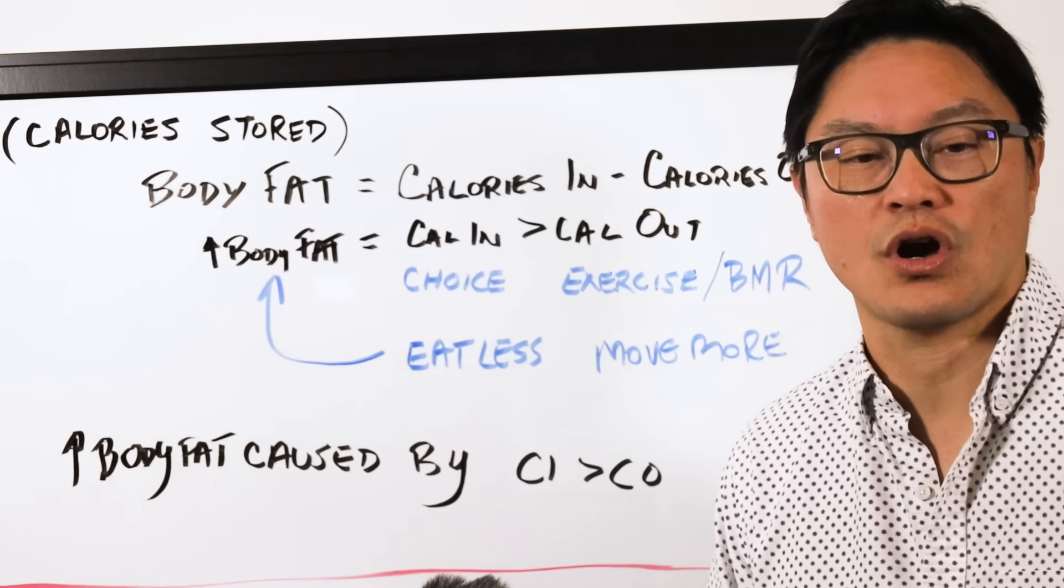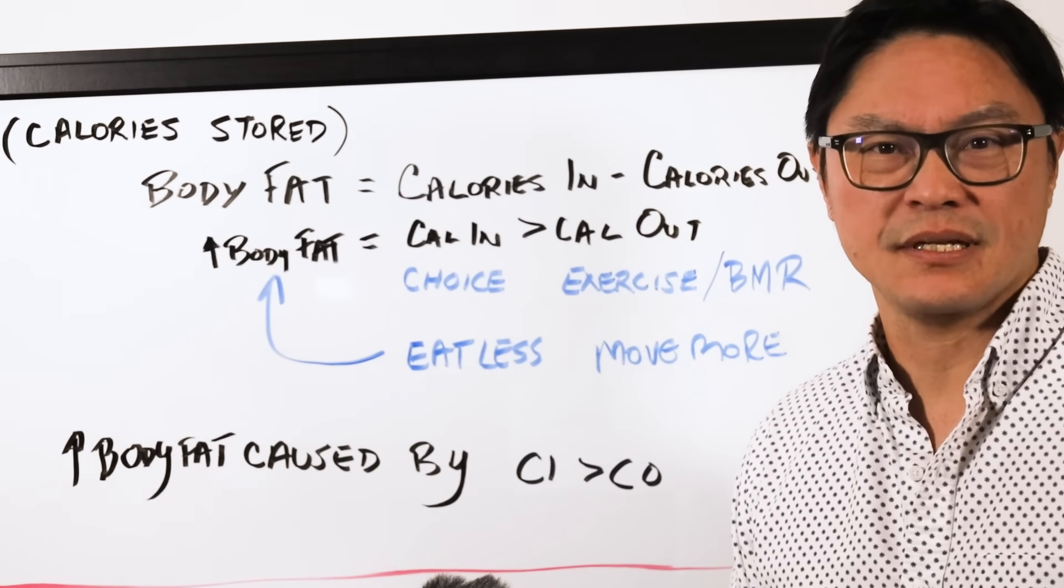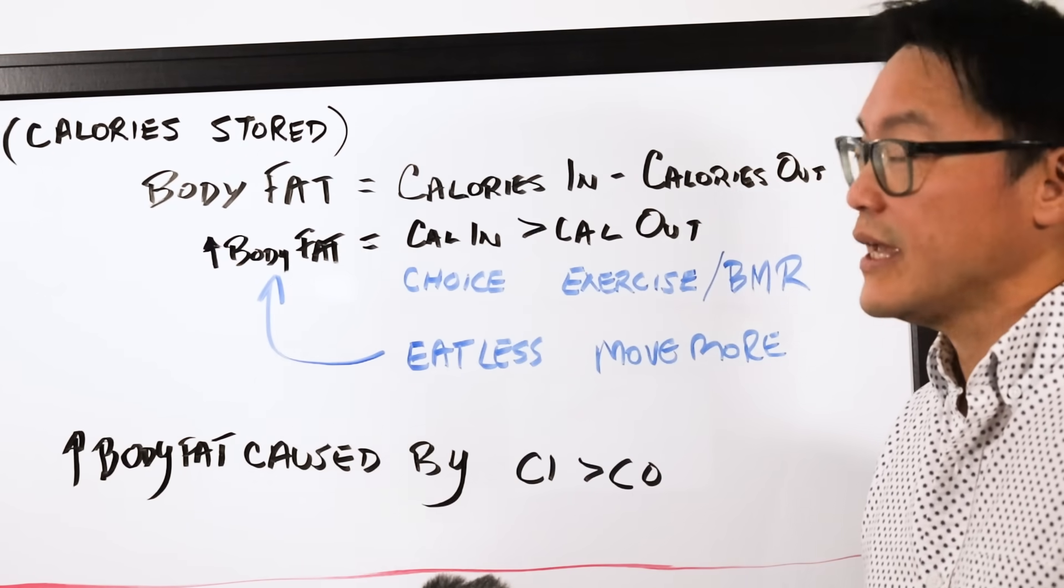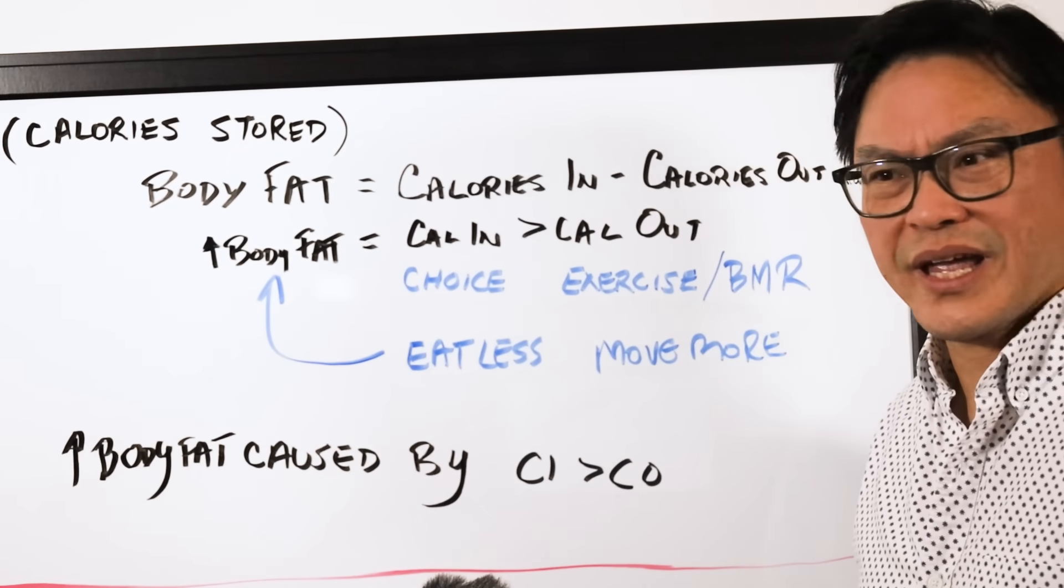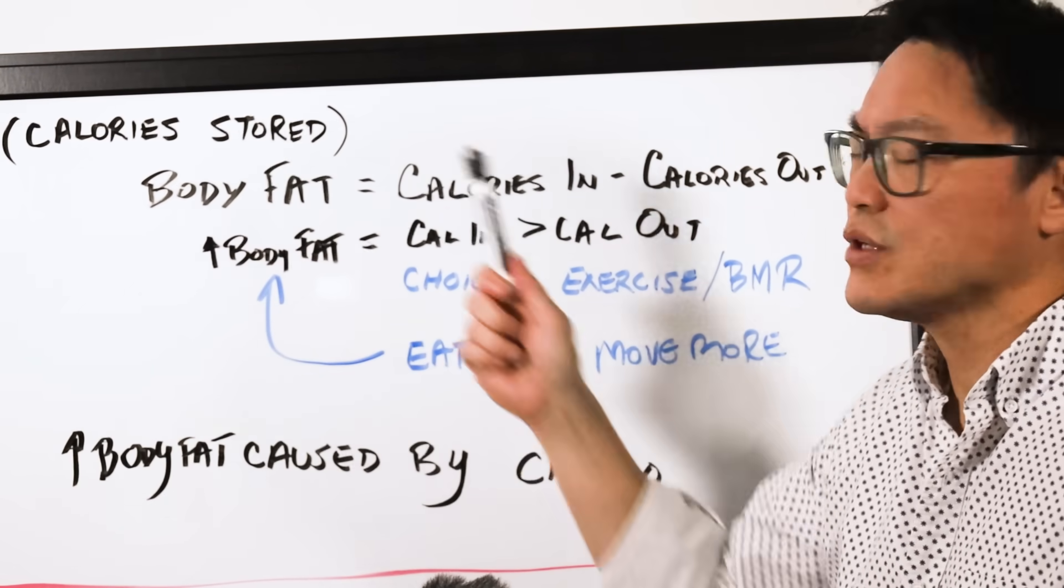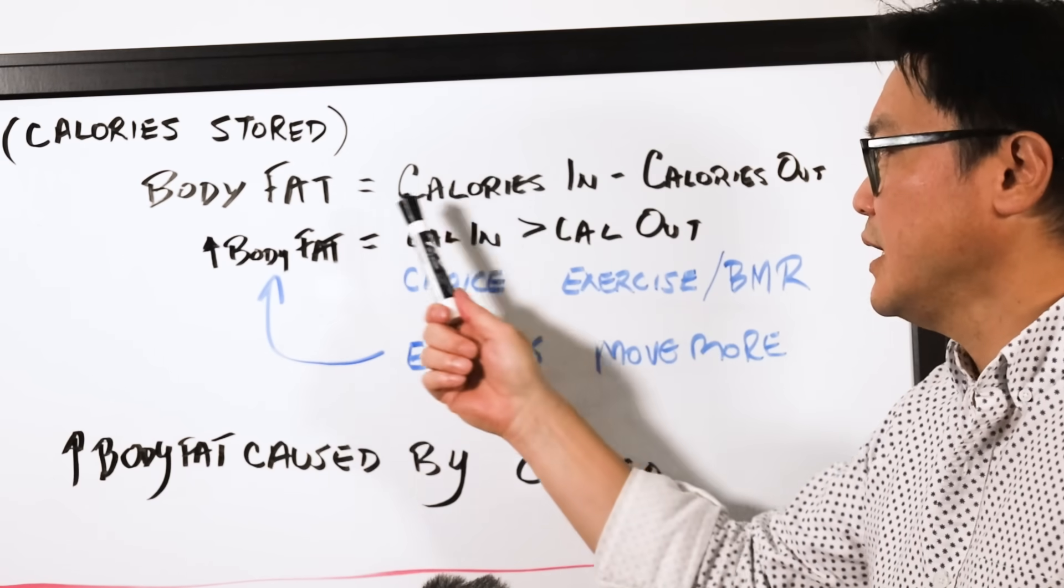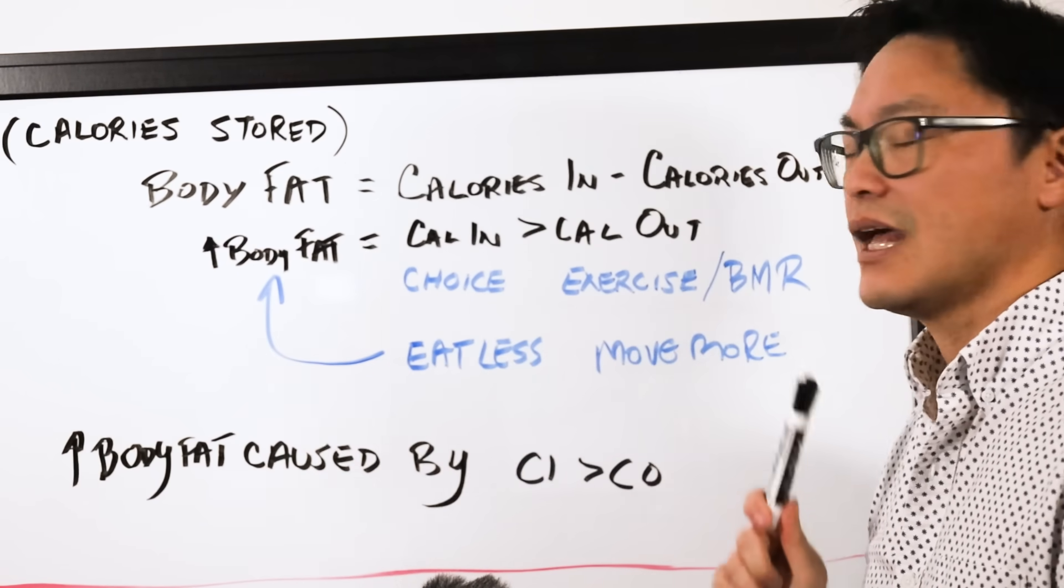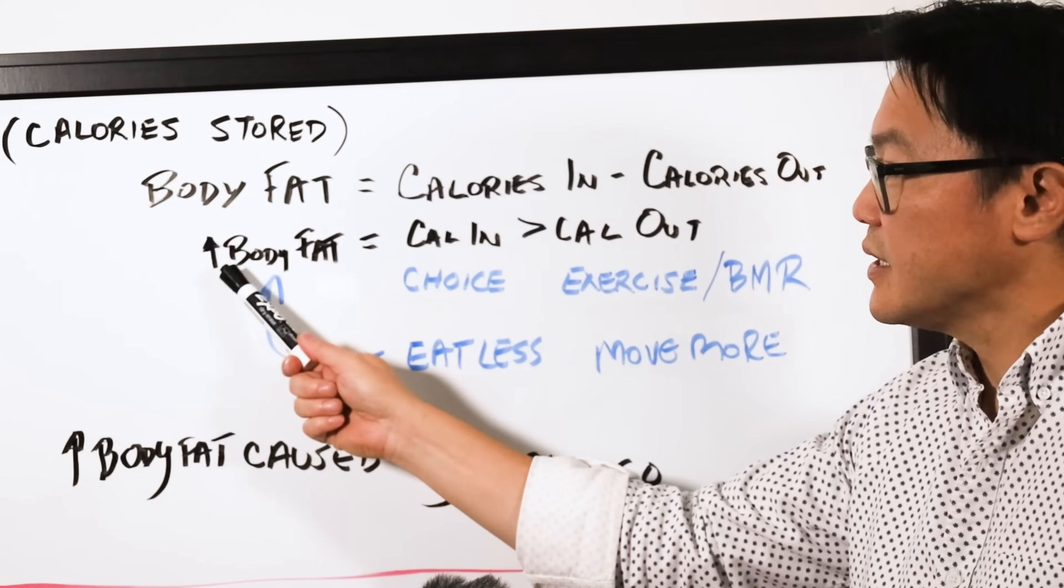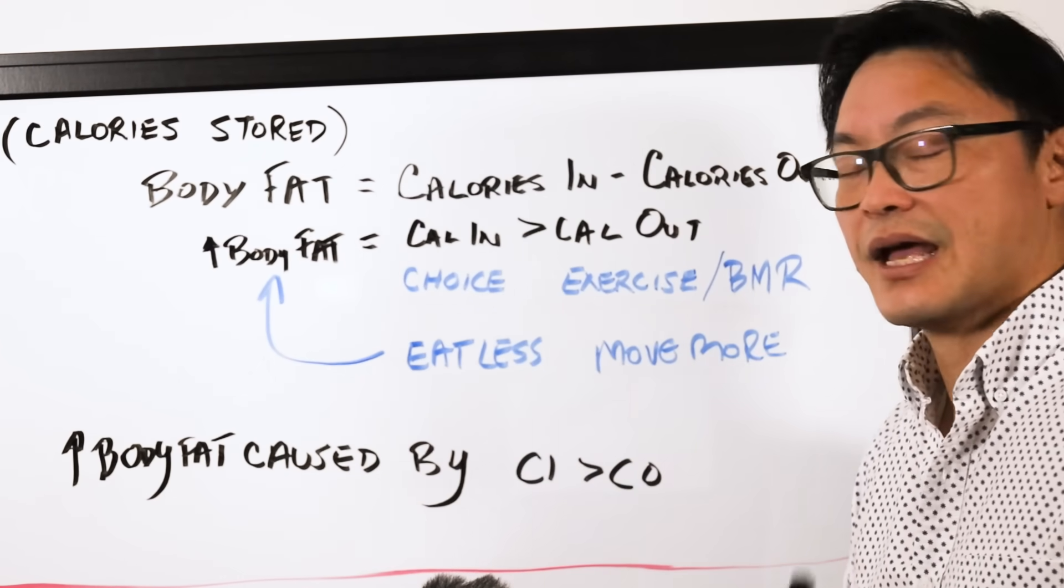Calories don't cause obesity. It's the biggest lie in obesity medicine. So this is the way that most of us think about weight loss. What causes us to gain weight? Well, body fat, which is simply the amount of calories that are stored on the body, equals calories in minus calories out. You can rewrite it and say that the increase in body fat equals the calories in greater than calories out. This is always true, and nobody is disputing that.